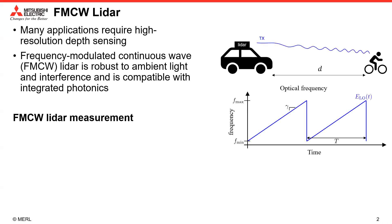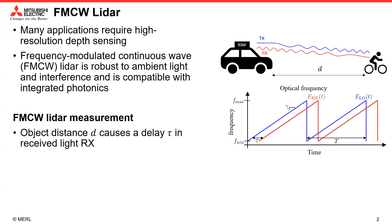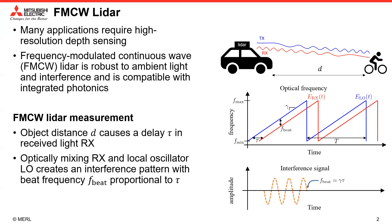The LiDAR system transmits an optical chirp with chirp rate gamma and retains a copy of the chirp as the local oscillator. The distance to the object causes a time delay in receiving the reflected signal. Optically mixing the received signal with the local oscillator creates a sinusoidal interference pattern whose beat frequency is the delay multiplied by the chirp rate. The goal of FMCW LiDAR is to estimate the distance by estimating the beat frequency.